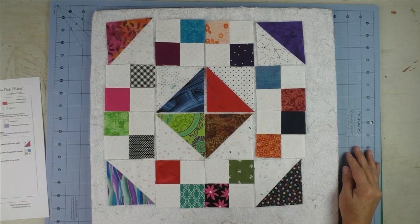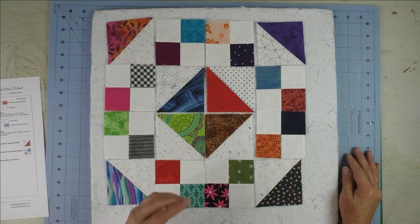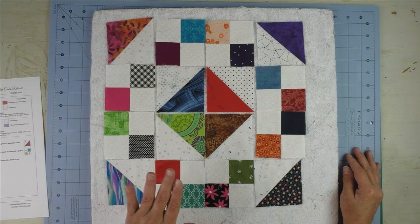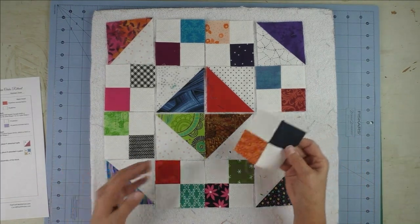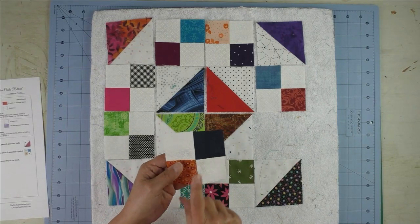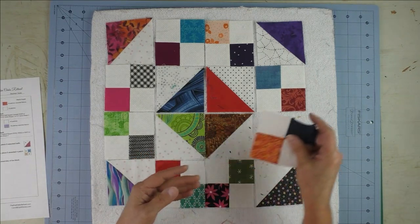If you're going to do an entire quilt out of this block and you're going to use your scraps, you don't have to cut individual pieces or individual squares to make your four patches.